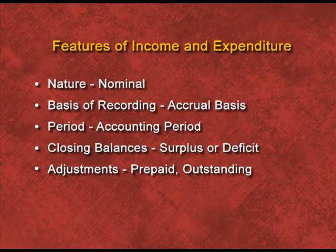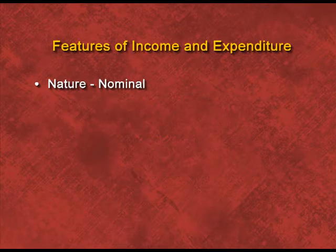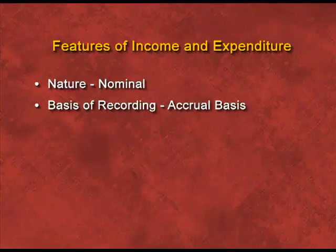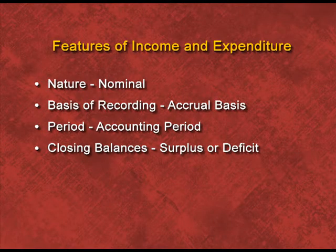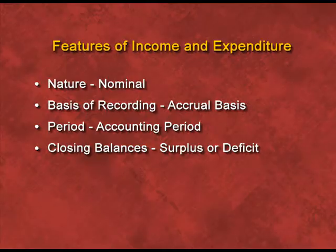Now let us discuss the features of income and expenditure account. First, its nature: it is a nominal account because we record all expenses and incomes. Second, basis of recording: it is based on accrual basis, meaning we include all types of transactions whether cash or outstanding. Third, period: income and expenditure account is prepared for the particular current accounting period; transactions belonging to the previous year or next year are not included. Fourth, closing balances: we prepare it to check whether there is a surplus or a deficit. Fifth, adjustments: we make all types of adjustments like prepaid, outstanding, accrued, and advanced.